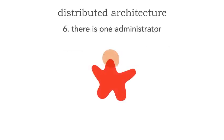Fallacy number six is the assumption we make that there's only one administrator — that's the only person we need to coordinate with for any changes or information about the network. Nothing could be further from the truth, especially in global organizations which have hundreds of network administrators spread across the entire globe. This makes communication really, really hard — not only to communicate network changes to application developers and architects, but also vice versa.